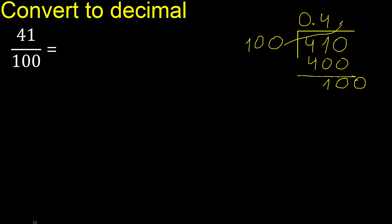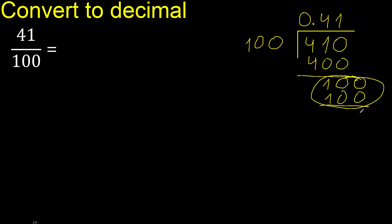100 multiplied by which number? Multiplied by 1 is 100. Subtract 0 — 0, therefore finish.